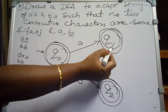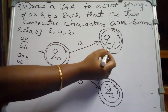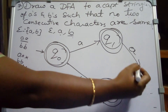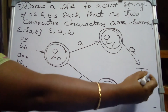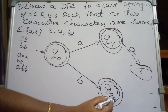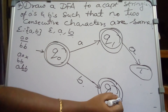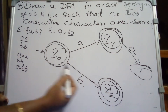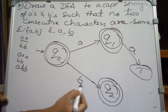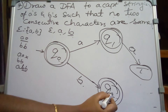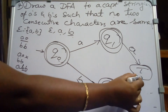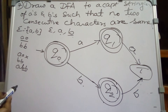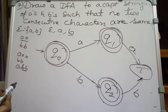So for state Q1 on input A, we move to the trapped state — the dead state. For state Q2 on input B, since B is the second consecutive same symbol, the string must be rejected, so it also moves to the trapped state.